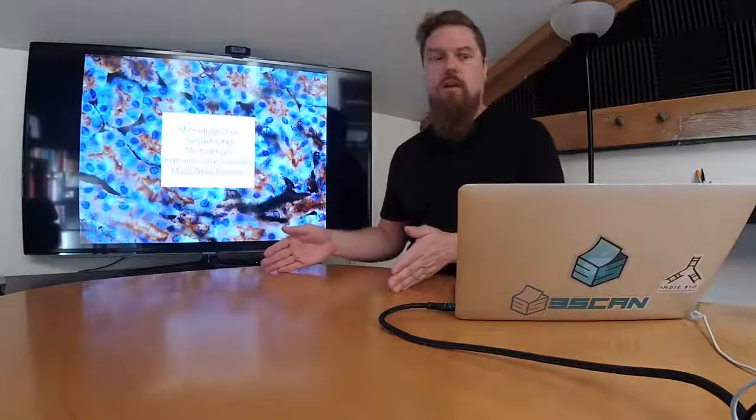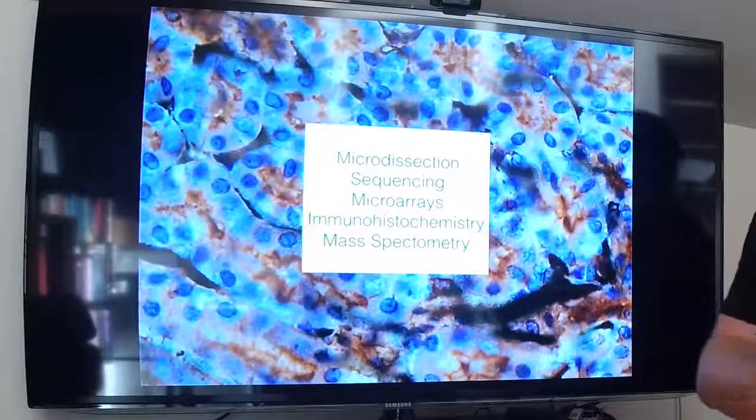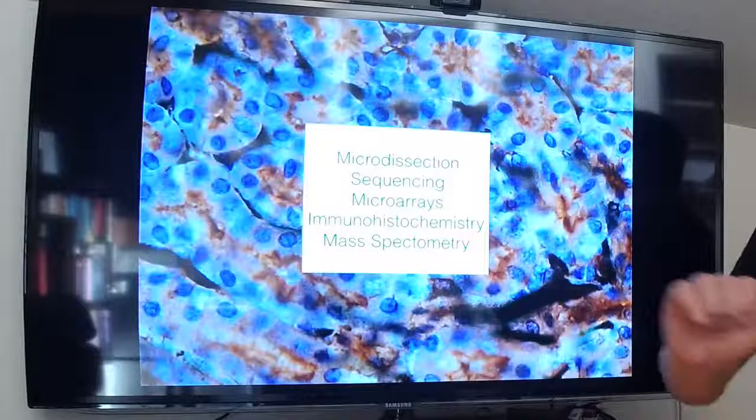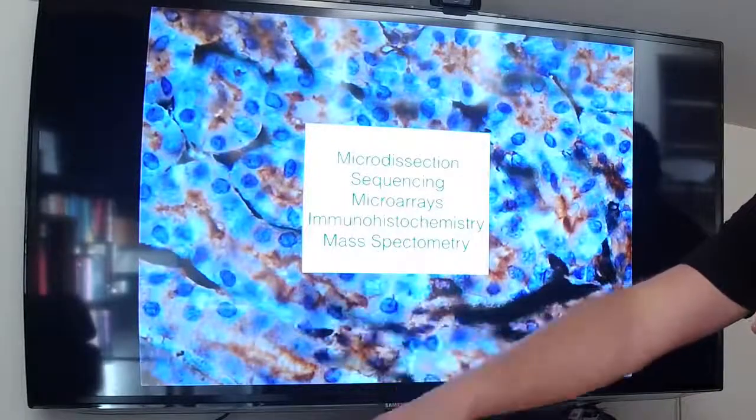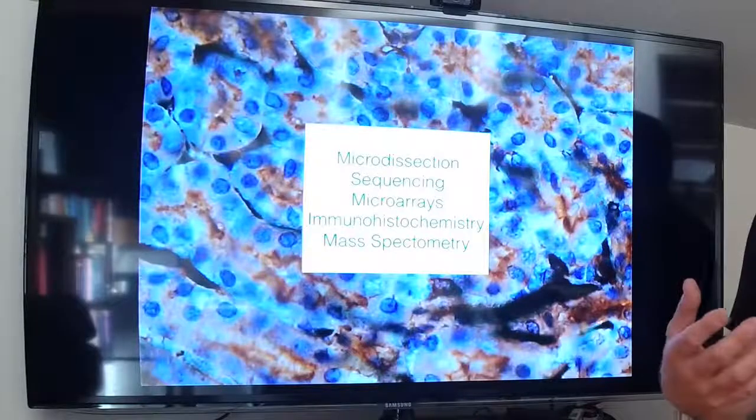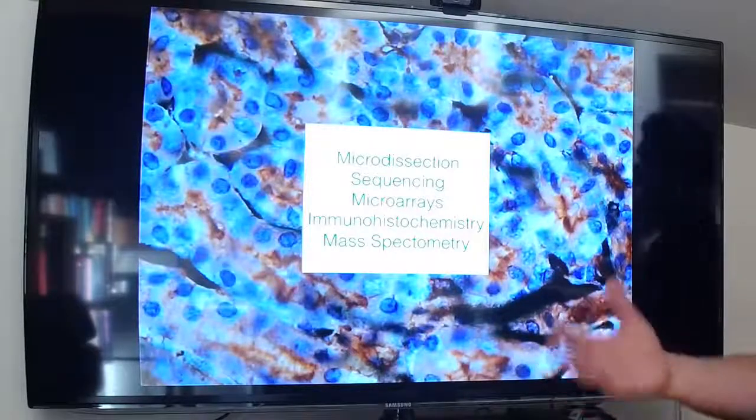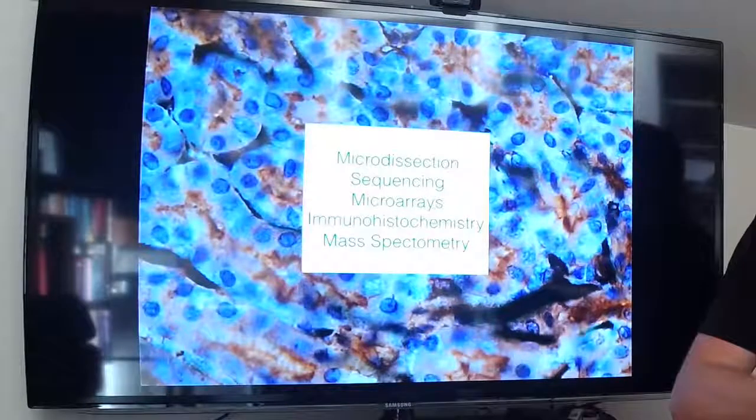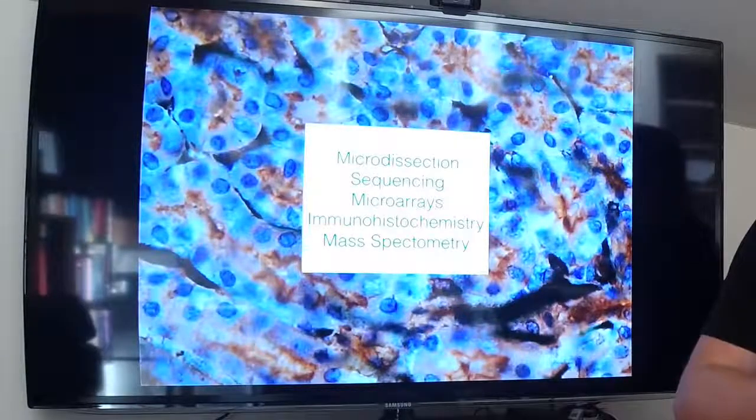Also, once it's on glass, you can add additional dimensionality. So you can micro-dissect the tissue and run it through DNA sequencing. You can take it and do, you know, look at the RNA with microarrays. You can do immunohistochemical panels or mass spec or any number of other molecular investigations and bring that back and co-register it with the 3D pathology and with the radiology.